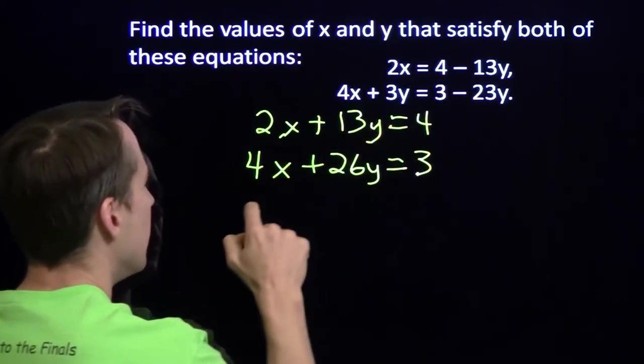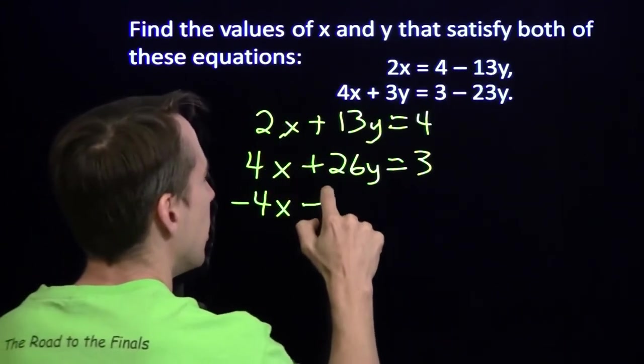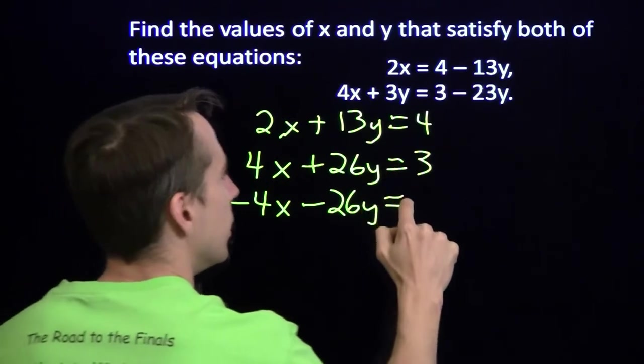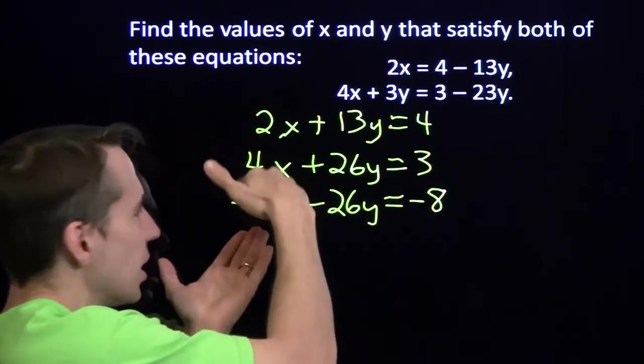If I multiply this, the left side by negative 2, I'll have minus 4x minus 26y is minus 8. So I've got my elimination set up. I'll knock out the x's when I add these two equations.